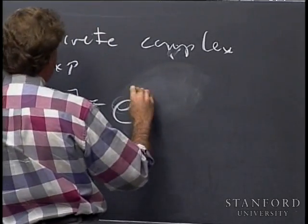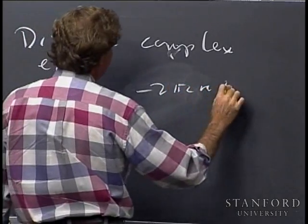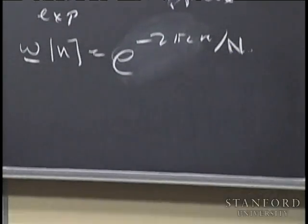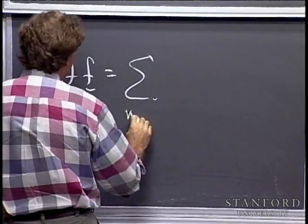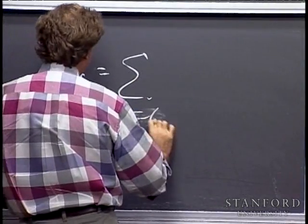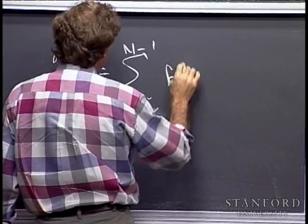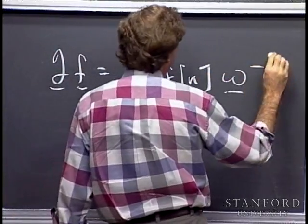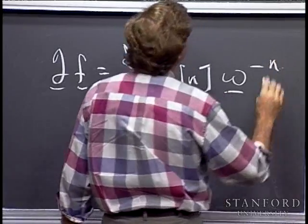The nth component of omega is e to the minus 2 pi i n over m. The discrete Fourier transform is a combination of these: the Fourier transform of f is the sum from n equals 0 to capital N minus 1 of the components of the input times the powers of this discrete complex exponential, omega to the minus n.